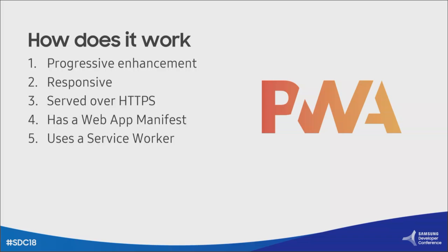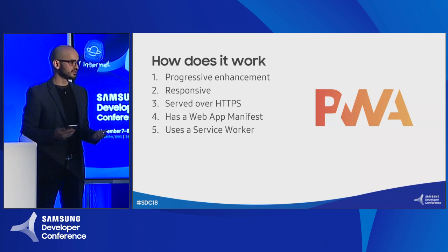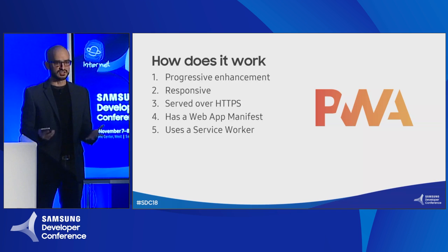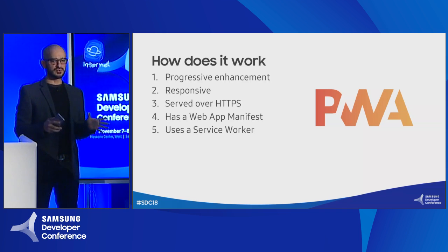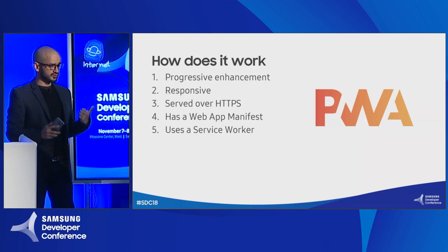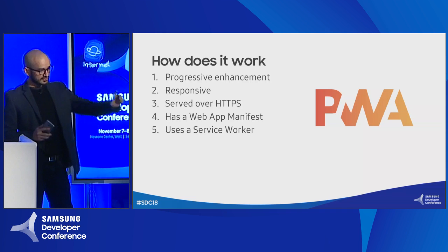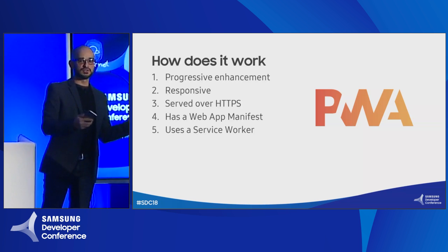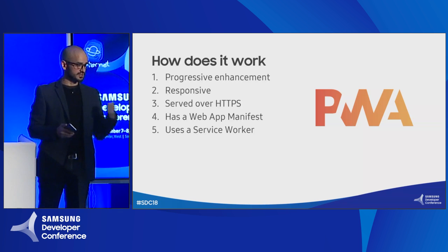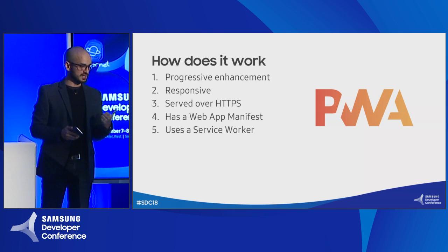If we really want to start building progressive web apps, there are certain modifications we need to make to a website. First, it must be compliant with progressive enhancement — it should work regardless of which browser or device you're using. It should be responsive, adapting to any screen. It should be served over a secure connection — HTTPS. And the last two points are probably the most specific to PWA: it has to have a web app manifest and it has to use a service worker.